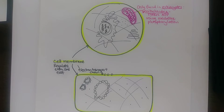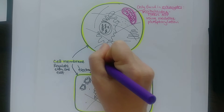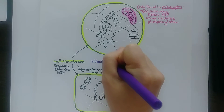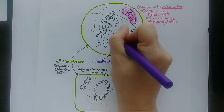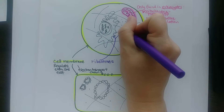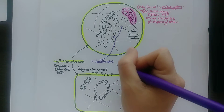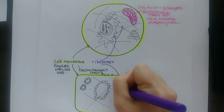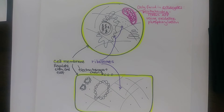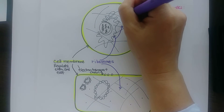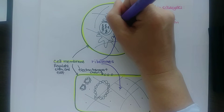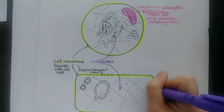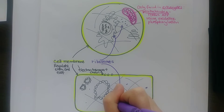The second structure that is the same in both prokaryotes and eukaryotes is that they both have ribosomes. We'll mark those in purple. Sometimes they're free in the cytoplasm in eukaryotes — they appear as little dots throughout the cell. Ribosomes are found in both prokaryotes and eukaryotes.